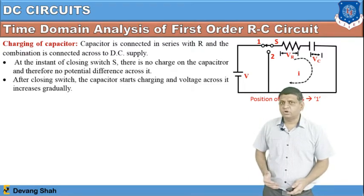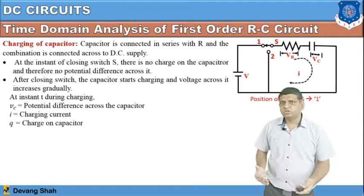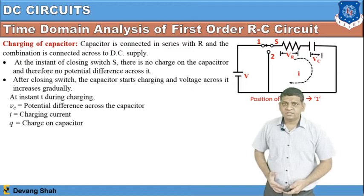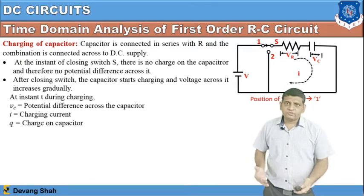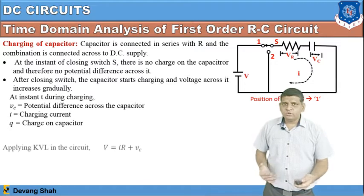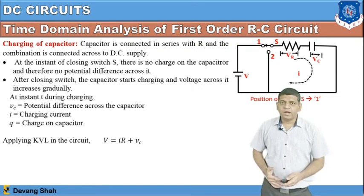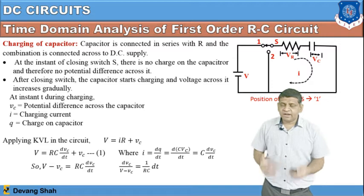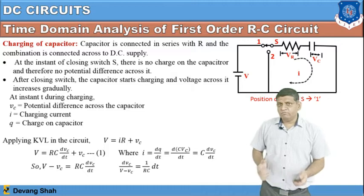When voltage V is applied, Vc is the voltage drop across the capacitor, Vr is the voltage drop across the resistance, I is the charging current, and Q is the charge on the capacitor. Applying Kirchhoff's Voltage Law in this loop: total V equals IR plus Vc. From this, I can write the equation V equals R·C·(dVc/dt) plus Vc.